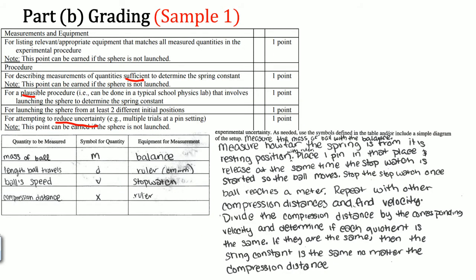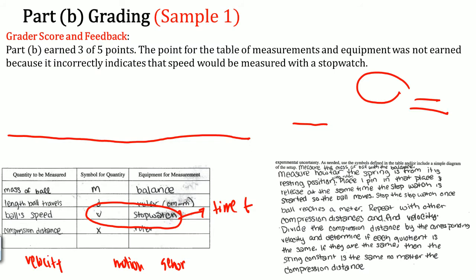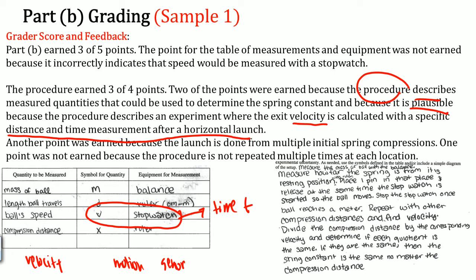Sample one did not earn the reduced-errors point because it does not explicitly state reducing error. However, another point was earned because it is done from multiple initial spring compressions — it does say 'repeat for a compression distance.' So sample one earned 3 out of 5 points.